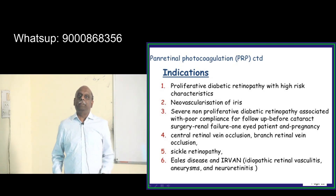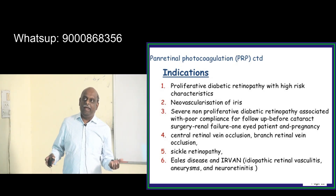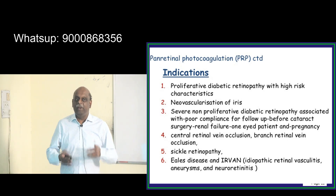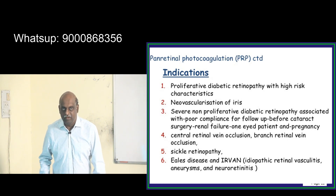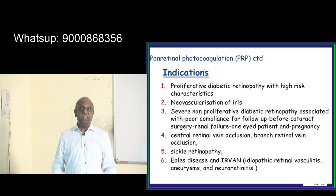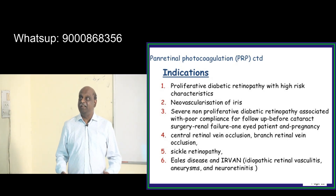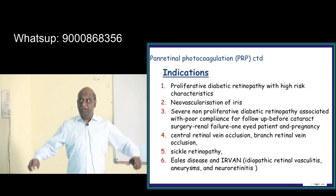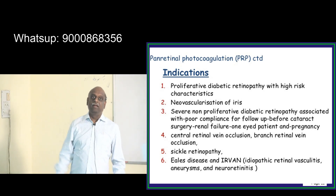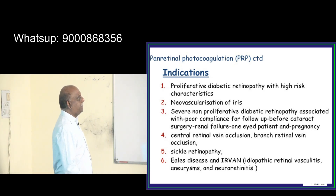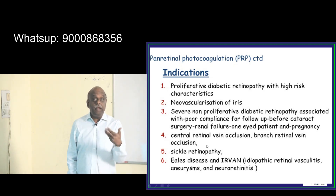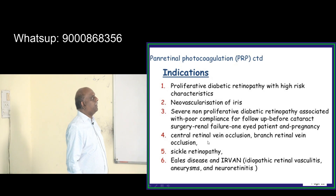For example, you tell the patient their retina is still non-proliferative but sugars are very bad. Before cataract surgery, please control your sugar. But the patient does not listen, keeps eating rice, is sedentary, and sugars are shooting. Then before the cataract surgery, you may need to use pan-retinal photocoagulation.